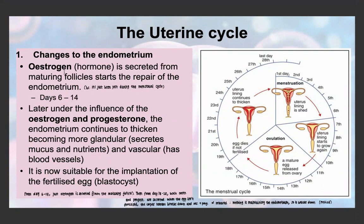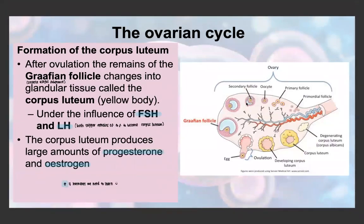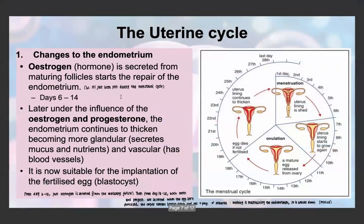The follicle has started to mature under the influence of FSH, and as it matures it begins to release estrogen. This estrogen works in the uterus to repair the endometrium, because the endometrium was just shed during the period.